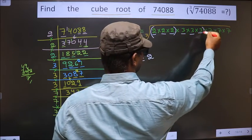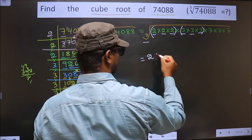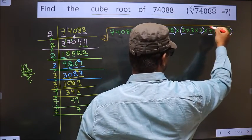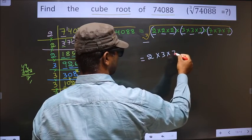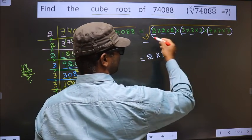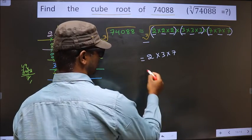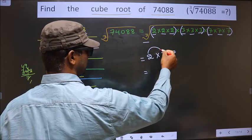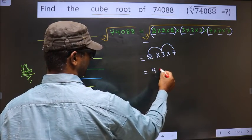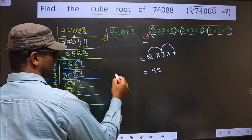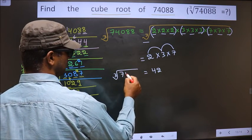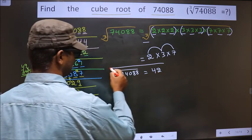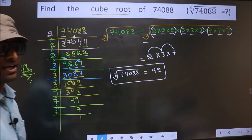Here the number 2 is present 3 times, so it comes out and is written only once. Next, the number 3 is present 3 times; it comes out and is written only once. Next, the number 7 is present 3 times; it comes out and is written only once. No more numbers are left inside the cube root. So we multiply: 2×3=6, and 6×7=42. Therefore, the cube root of 74088 equals 42.